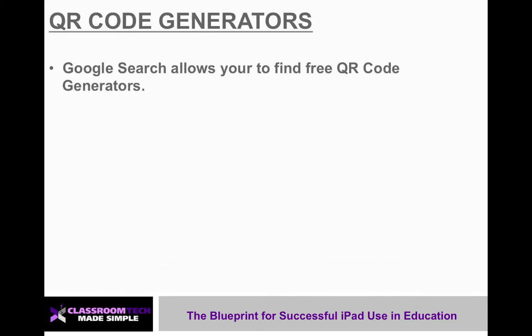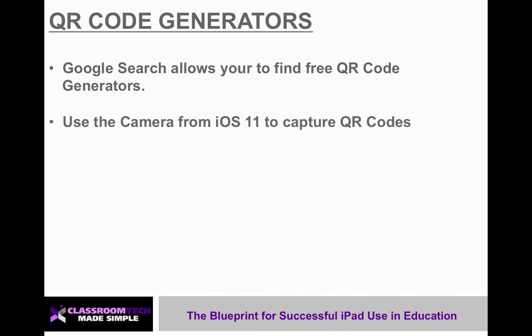QR code generators — if you just do a simple Google search, it allows you to find a free QR code generator. There are literally thousands of them out there. Now with the iOS 11 update or later, you can capture QR codes using your camera, which is a huge benefit. You don't have to mess around with downloading an app where students are asking which one to use or maybe some don't function properly. Now you can just use your camera if you have iOS 11 or later.